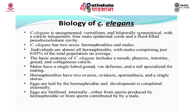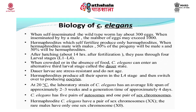The males have a single lobed gonad, a vas deferens and a tail specialized for mating. Whereas the hermaphrodites have two ovaries, oviducts, spermatheca and a single uterus. The eggs are fertilized internally by sperm produced by the hermaphrodite or by sperm contributed by a male. Eggs are laid by the hermaphrodites and development is completed externally. C. elegans has five pairs of autosomes and one pair of sex chromosomes.